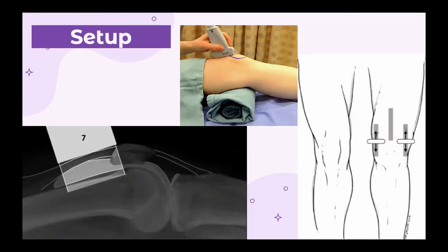For patient setup, the patient would be supine and you place something such as a towel or cloth beneath their knee to raise it and create a 30-degree flexion at the knee. These are the areas where you would place the probe, with the indicator pointing upwards. You start with the longitudinal view and then begin identifying structures.